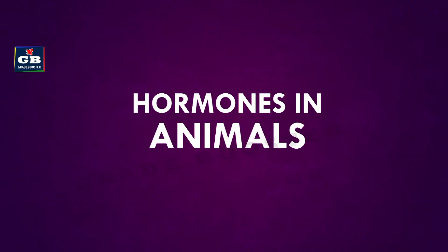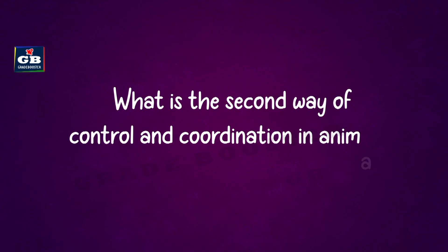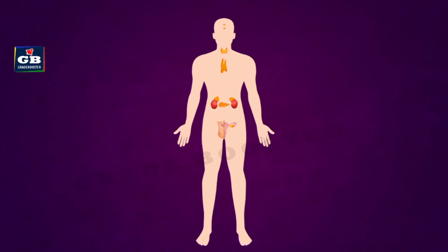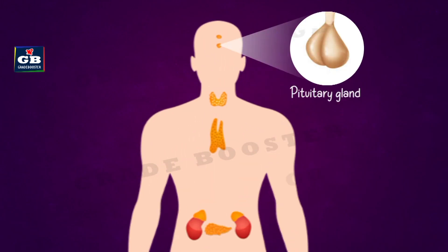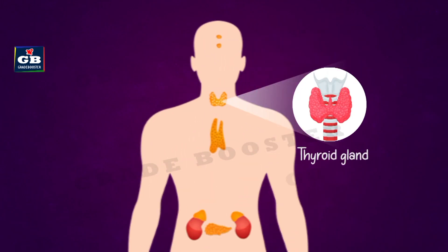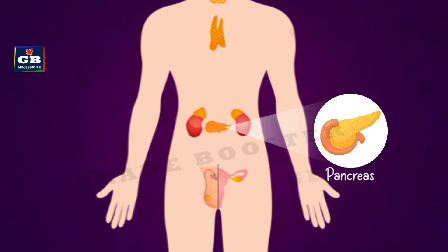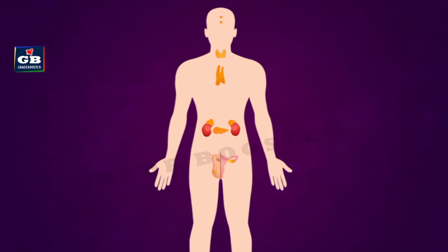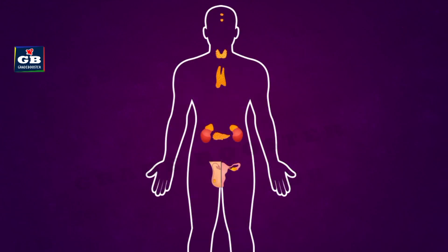The second way of control and coordination in animals is done by the endocrine system. The endocrine system is comprised of various endocrine glands like pituitary gland, thyroid gland, adrenal glands, pancreas, testis, and ovaries. These glands secrete some special chemical compounds called hormones.